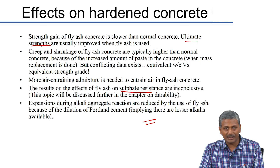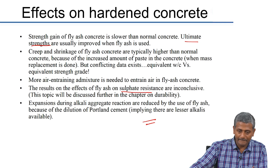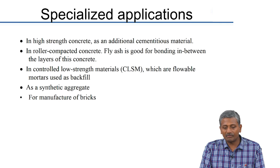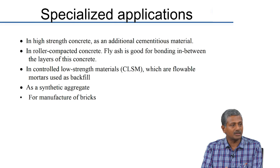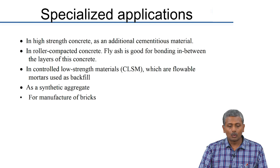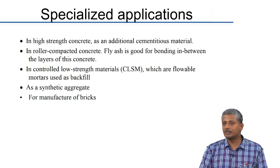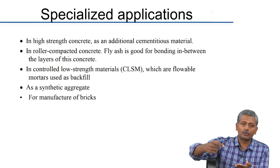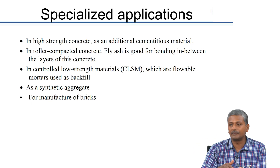In specialized applications like high strength concrete, fly ash can be used as an additional material — not as a replacement of cement, but as an additive over and above the existing cement quantity. Roller compacted concrete is another application where fly ash usage is quite beneficial. In roller compaction, layers of concrete are compacted using rollers and built up successively — used especially for pavements or dams. There is data showing improved bonding between RCC layers when fly ash is used.